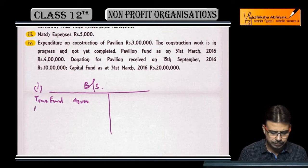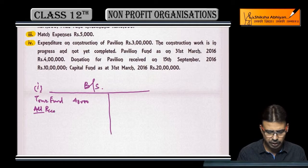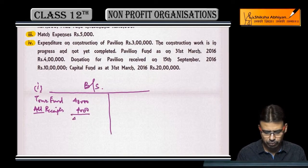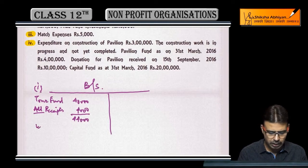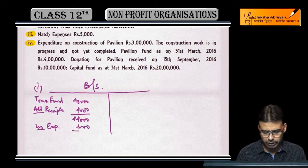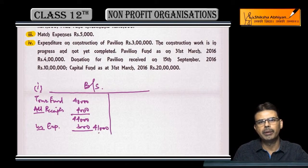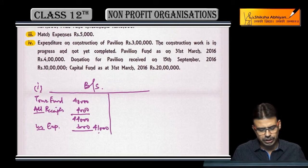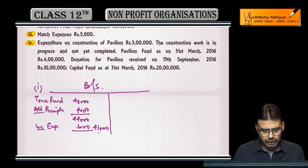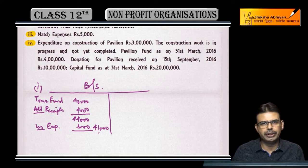Jitni bhi receipts hain, add karengi: 4,000 add hojaengi, total 44,000. Expenses minus hojaengi: 3,000 minus, to 41,000 iska balance — balance sheet ki liability side par. Dhyan se: koi bhi special fund ho, us fund se related jitni bhi receipts hain wo add hojaengi, aur us se related jitni bhi expenses hain wo minus hojaengi. Isko show karengi balance sheet ki liability side par.